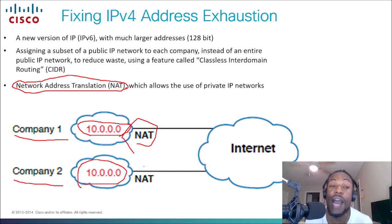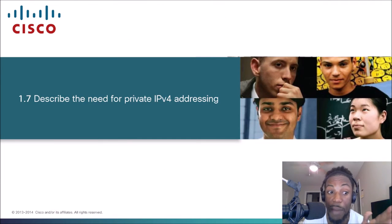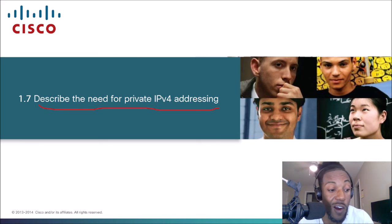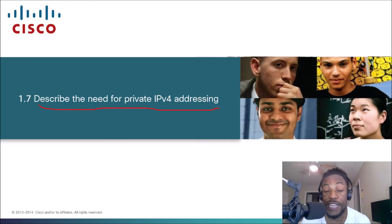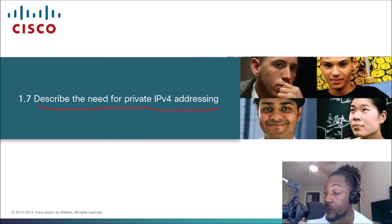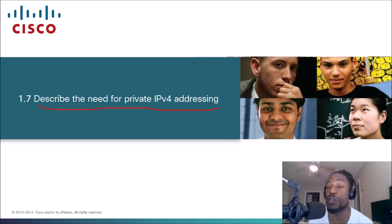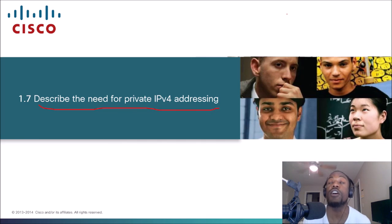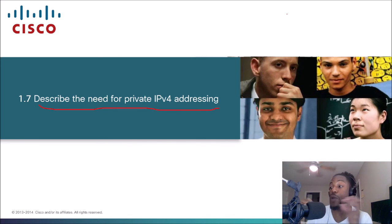NAT allows companies to reuse private address ranges like 10.x internally — even if two companies use the same private range, since they're not routable on the Internet it doesn't matter. That's the main reason we use private IP addressing: we ran out of IPv4 addresses because devices like refrigerators, cars, computers, and cell phones all needed IP addresses, and NAT lets us translate private IPs to a public IP when needed.